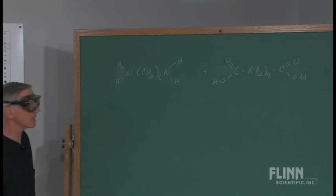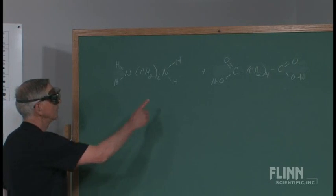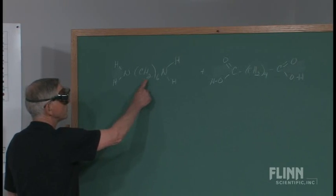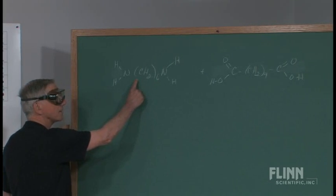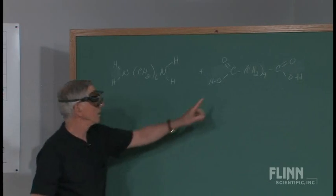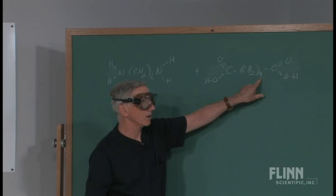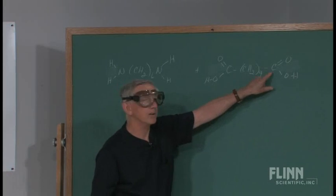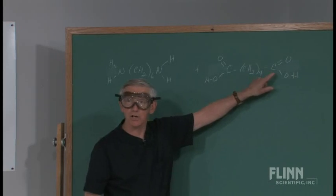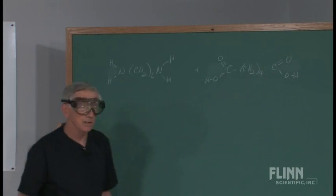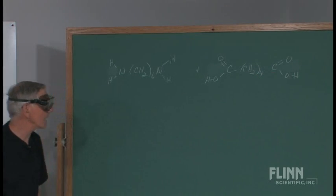The 66 is simple. There are six carbons in the diamine, and six carbons in the diacid.